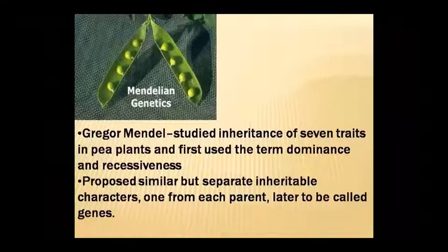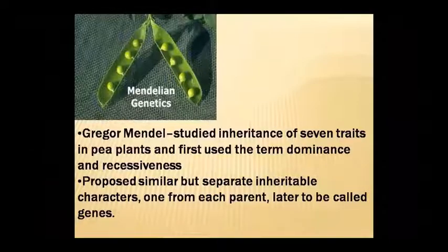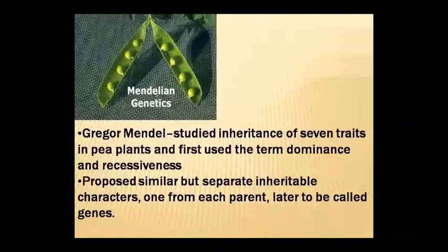Mendel studied inheritance across seven traits in pea plants. He was the first to use the terms dominance and recessiveness. He also proposed that separate inheritable characters come from each parent — what we now call genes — though at the time he called them 'factors.'